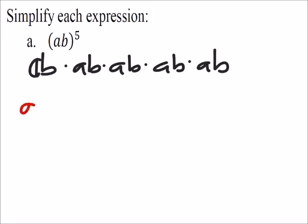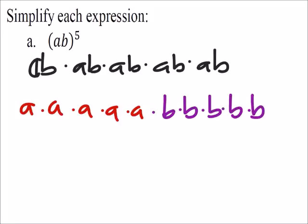If we rearrange these, then we'd have a times a times, well, five of these. And then we'd have five of these b's as well, which would give us a to the power of five times b to the power of five.